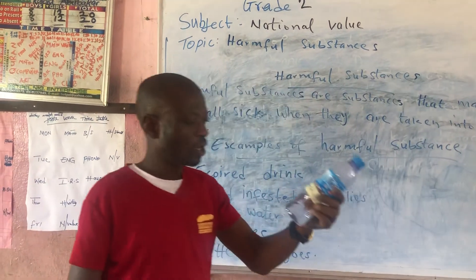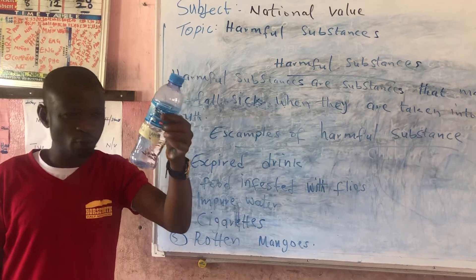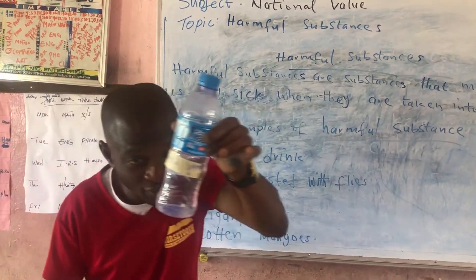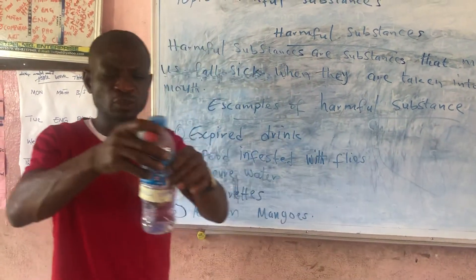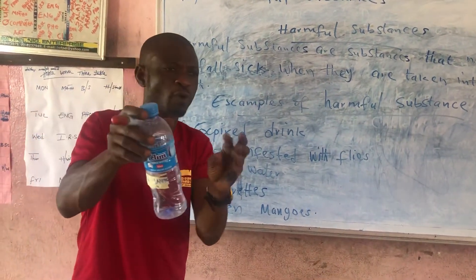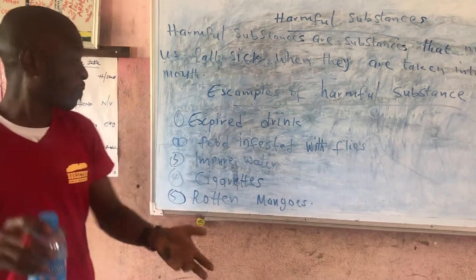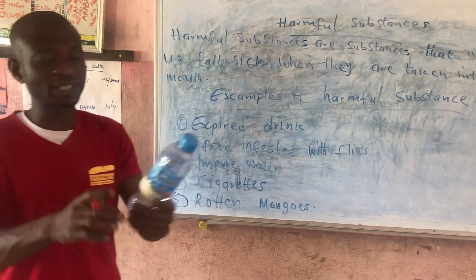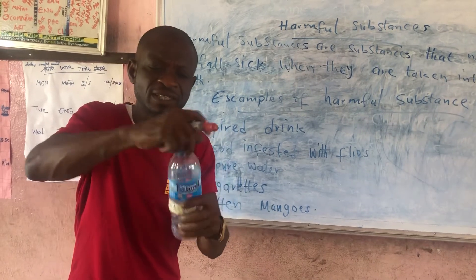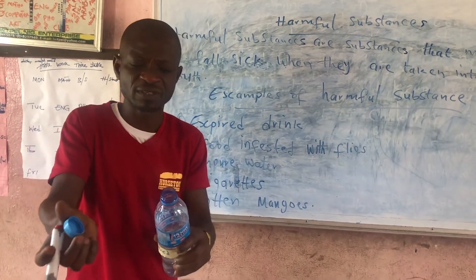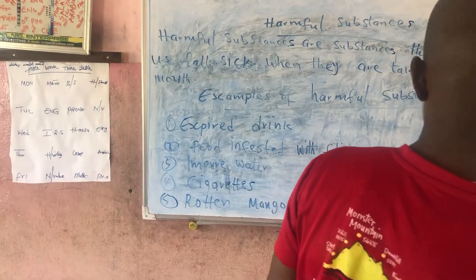The third example is impure water. You can see this water — it looks like it could be pure, but it is not pure because you can see particles in it. When I say particles, I mean small things that are not supposed to be present in the water, like small stones or dirt. That is what we call particles. Pure water is sealed, but this one is no longer sealed, so particles have entered inside.